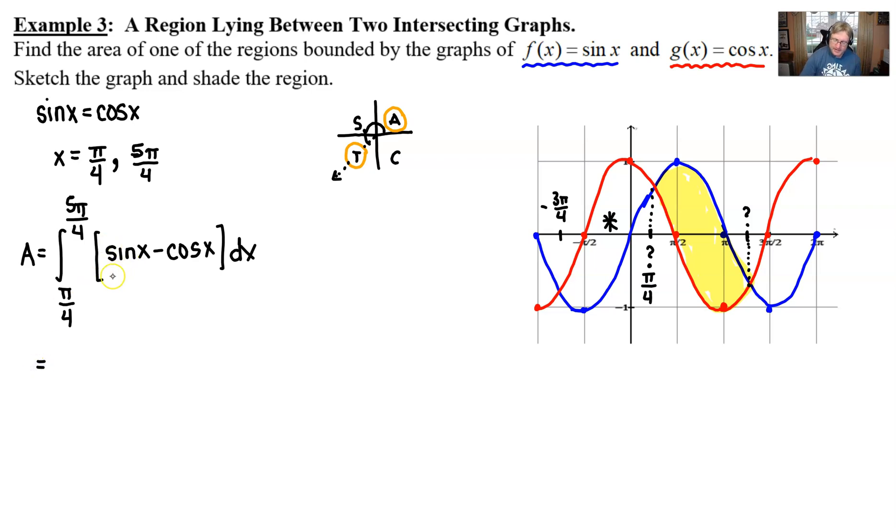To finish this up, we're going to integrate. Be very careful. When you integrate sin x, your answer is going to be -cos x. When we integrate cosine, we get positive sine, but there's already a negative in front of it. All of this will be evaluated from 5π/4 down to π/4.